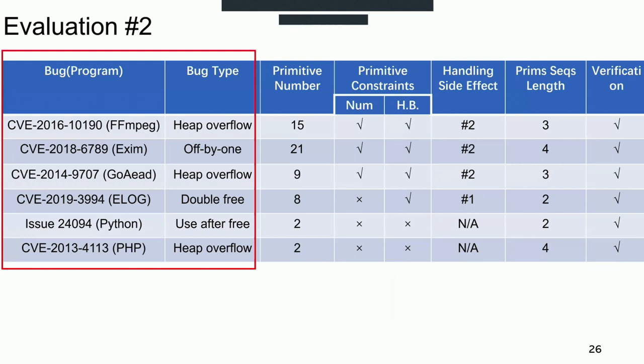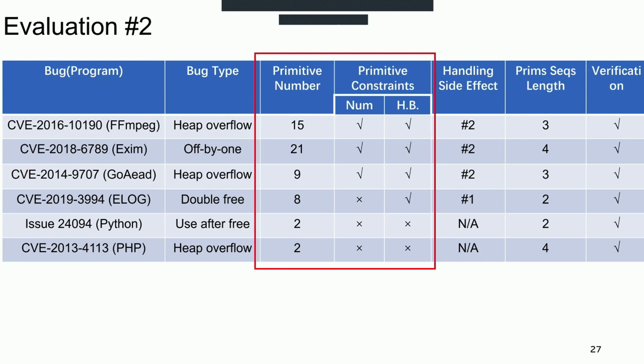We show part of the evaluation results in the table and list the details of manipulation results. From the table, we list six bugs from different programs, including heap overflow off-by-one, use-after-free, and double free. The third column shows the number of primitives extracted by BAGUA, and the next column shows two types of constraints of extracted primitives, which are invocation number limitation and happen-before relationship. Primitives in Python and PHP are independent, while primitives in other programs are restricted by program execution logic.